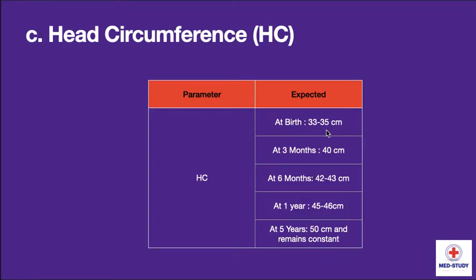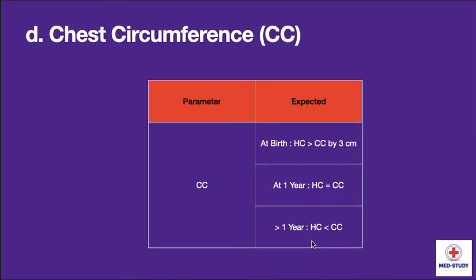Now going to head circumference. At birth it is 33 to 35 centimeters. At 3 months it becomes 40 centimeters. At 6 months it is 42 to 43 centimeters. At 1 year it becomes 45 to 46 centimeters, and at 5 years it becomes 50 centimeters and remains constant. For chest circumference: at birth, head circumference is greater than chest circumference by 3 centimeters. At one year they become equal. From more than one year, head circumference is less than chest circumference.